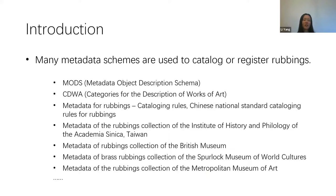Along with digitization, structured metadata schemes for rubbings have been generated and used. MODS, specifically for library applications, has been used to catalog rubbings by Harvard Library. CDWA is a set of cataloging rules for cultural works including art, architectures, manuscripts, paintings, photographs, prints, and sculptures. Besides these generic schemes, several specific metadata schemes were designed for rubbings: a Chinese national standard for rubbings cataloging rules, and a metadata scheme developed by the Institute of History and Philology of Academia Sinica in Taiwan. Several institutions also use homegrown schemes — for example the British Museum, the Spurlock Museum, and the East Asian Library at UC Berkeley.